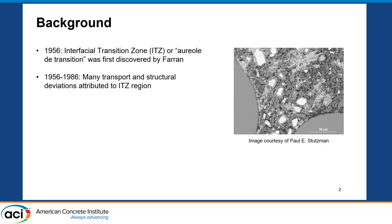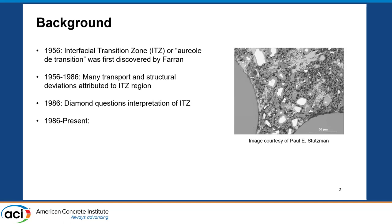But in 1986, Sidney Diamond questioned the previous interpretation of ITZ. The prior interpretation was that it was a perfect ring of a slightly more porous region all around the aggregate, and he was basically saying that might not be the case — it might be intermittent throughout or around the various aggregates. But this work was kind of overlooked, and not much was taken from it.